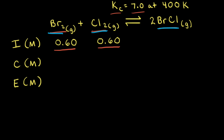To help us find the equilibrium concentrations, we're going to use an ICE table, where I stands for the initial concentration, C stands for the change in concentration, and E stands for equilibrium concentration.